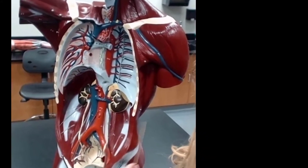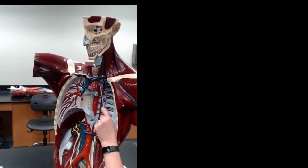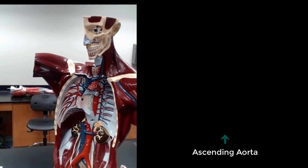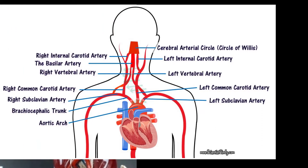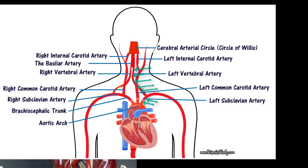Blood from the heart goes through the ascending aorta, through the aortic arch, and through the left subclavian artery. If you look at the diagrams, there is a branch that comes off superiorly from the subclavian artery, and that is the vertebral artery.